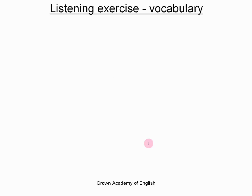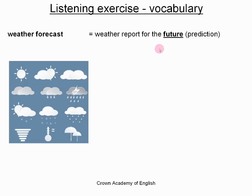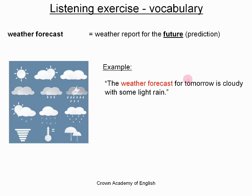So let's start with the vocabulary. The first word is weather forecast. A weather forecast is a weather report for the future — it is a prediction. Very often you see a weather forecast in the newspaper, on the internet, and very often on the television as well, perhaps after the news. An example: the weather forecast for tomorrow is cloudy with some light rain. So the weather forecast is a report for the future.